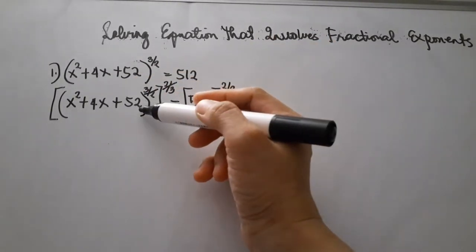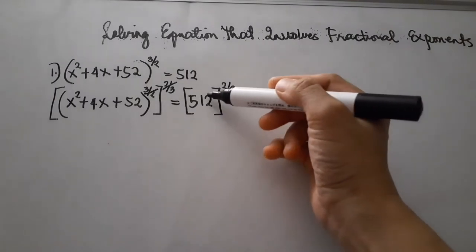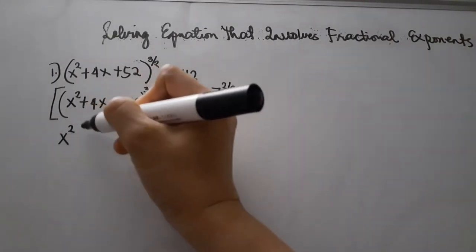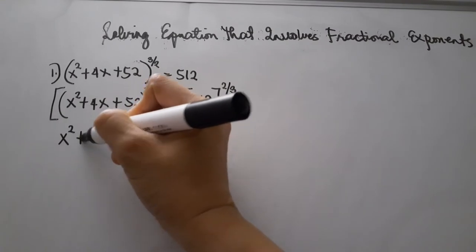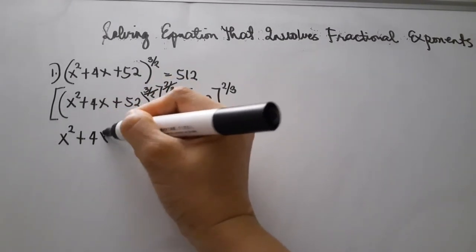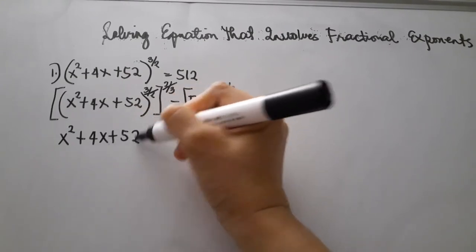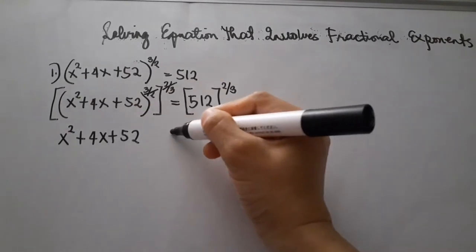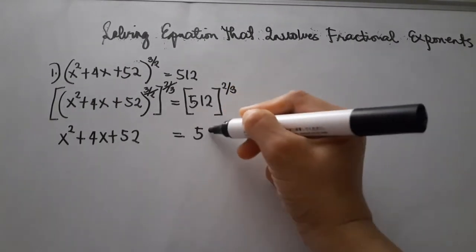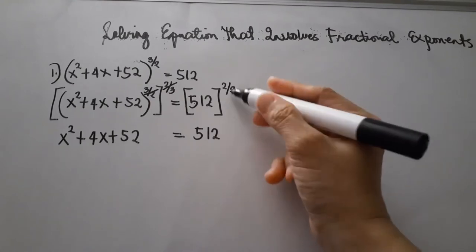So 3 times 2 is equal to 6, and 2 times 3 is equal to 6. Therefore 6 over 6 is equal to 1. The remaining expression is x squared plus 4x plus 52, equal to 512 raised to the power of 2 thirds.